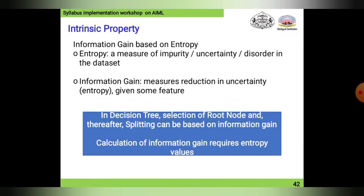Calculating information gain requires entropy values. In later slides we will learn about decision trees, where labels such as root node and decision parameters come into picture. These concepts will be explained in upcoming slides, so for now just understand and try to remember the names of these entropy properties.